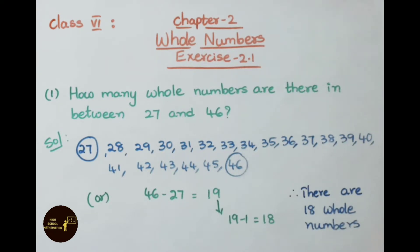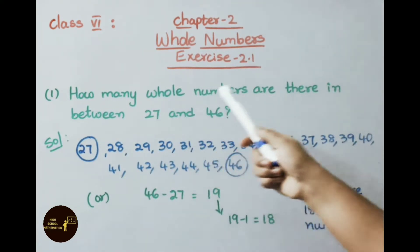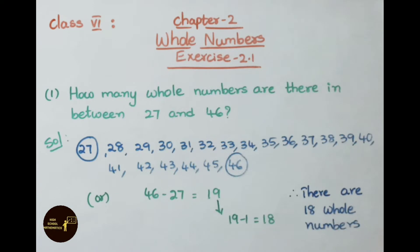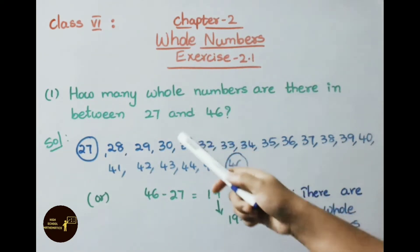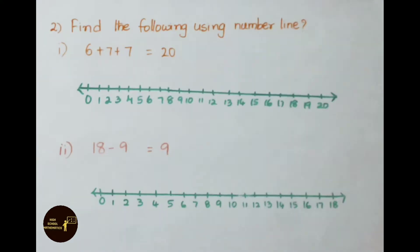See another method: from 46 you subtract 27, we get answer 19. But here our question is between numbers 27 and 46, so we subtract one number from this. So 19 minus 1, we get 18. Therefore, there are 18 whole numbers in between 27 and 46.